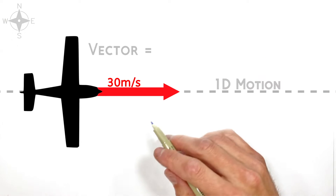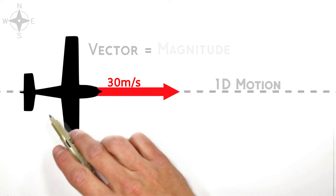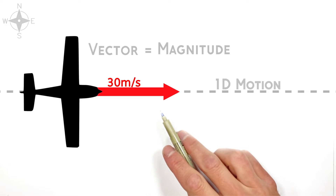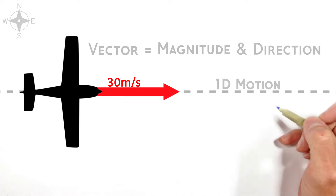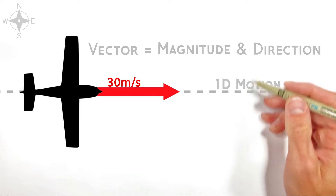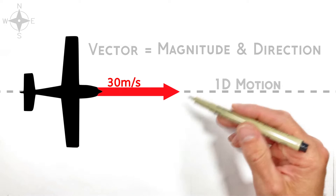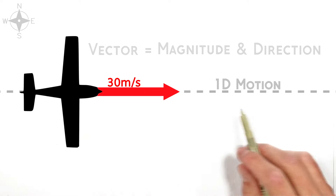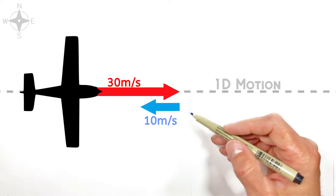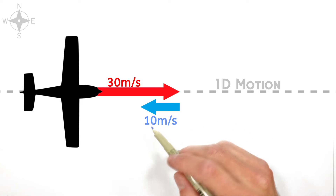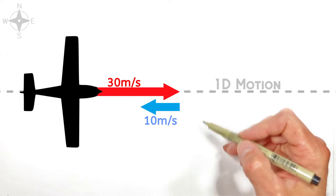A vector is just a quantity — in this case velocity — which has both a magnitude, that is how fast the airplane is actually traveling, and a direction, in this case east. And the first time people usually add together vectors is in one dimension, so usually what you'll see is a problem like: the plane is traveling east and the wind is blowing at 10 meters per second in the opposite direction, or toward the west. How fast is the plane actually traveling relative to the ground?